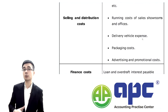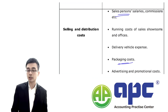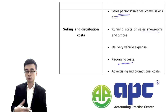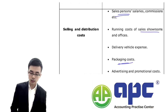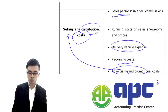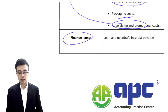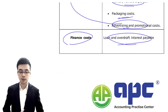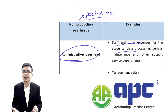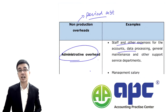Selling and distribution costs are also non-production overheads — for example, packaging costs, sales manager salaries, running costs of sales showrooms, delivery costs, and advertising expenses. Finance costs such as interest paid and tax expense are also non-production overheads, because those costs are incurred outside the factory.